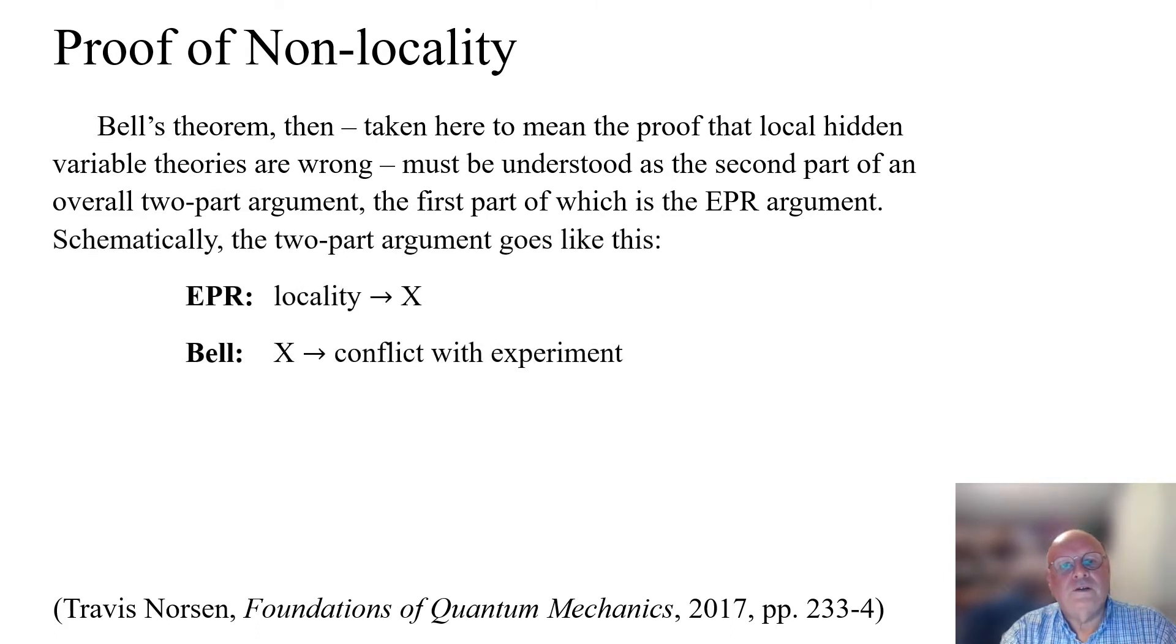Schematically, the two-part argument goes like this: the EPR theorem says that locality implies X, and Bell's theorem says that X implies conflict with experiment.